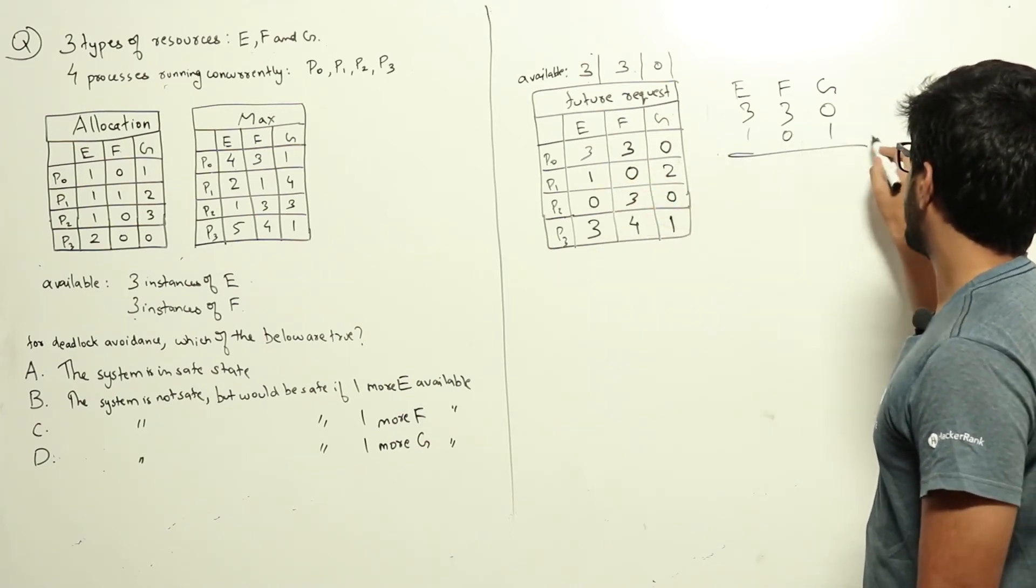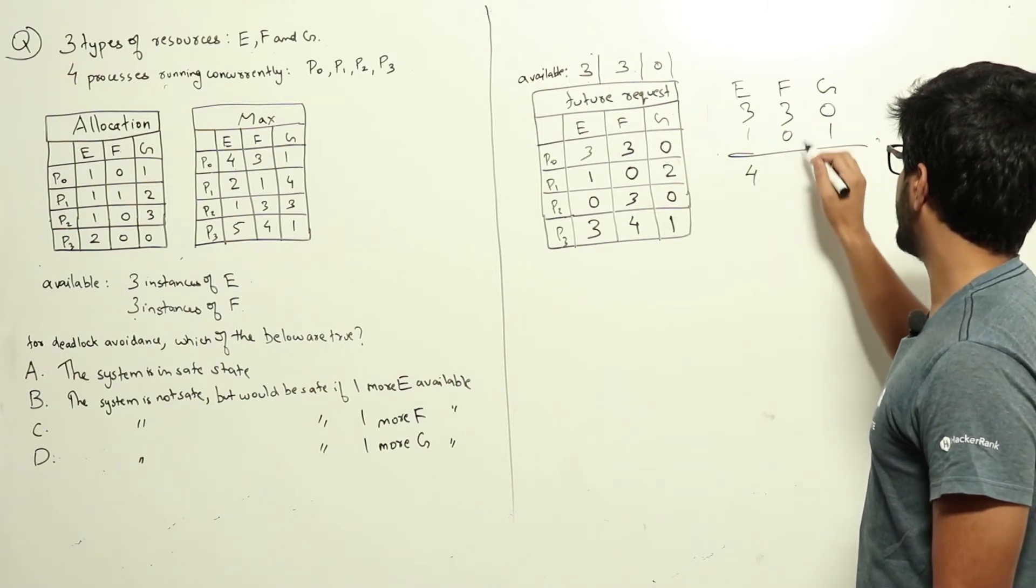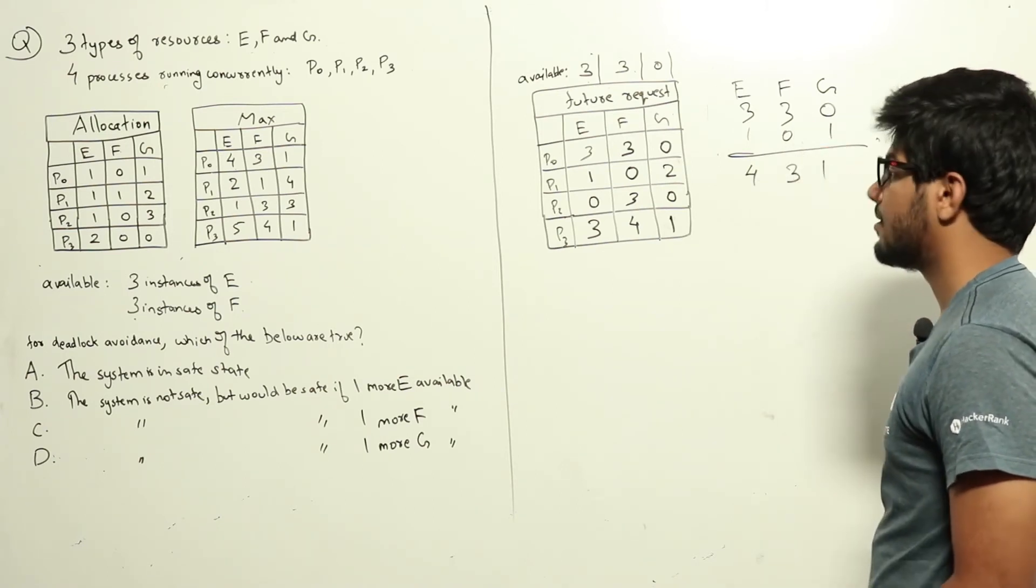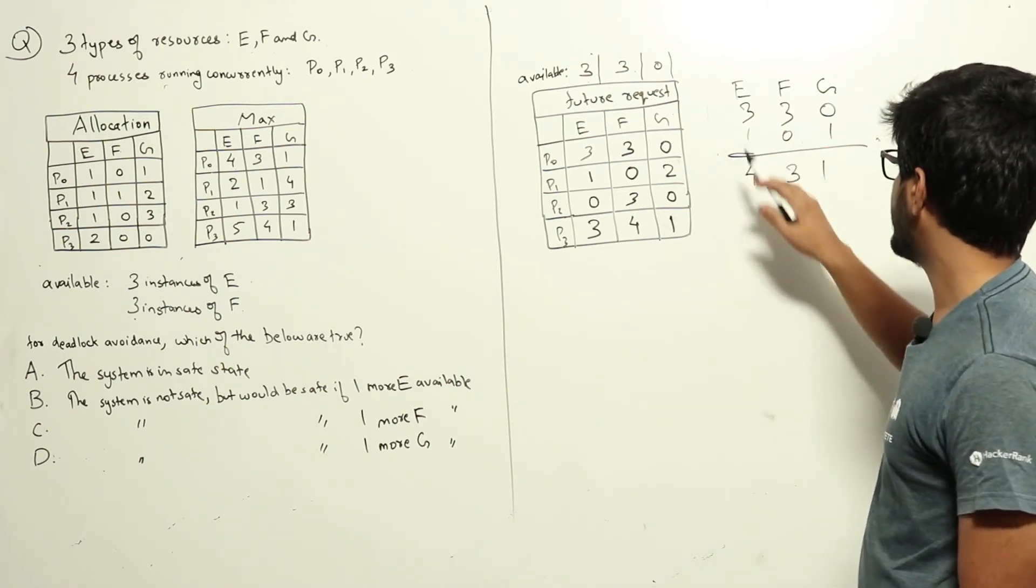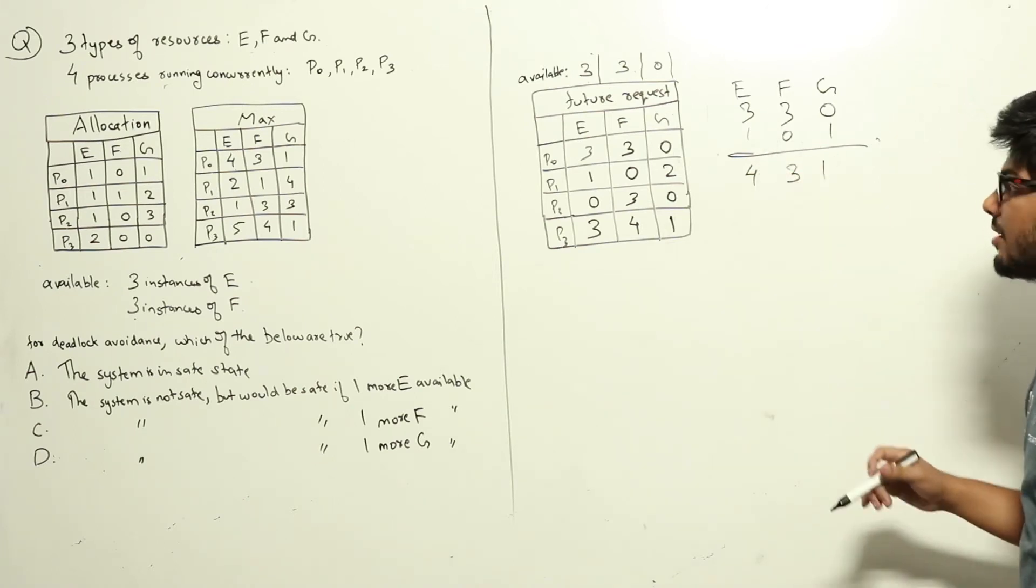The total is four, three, and one. Now we have four resources of E, three resources of F, and one resource of type G.